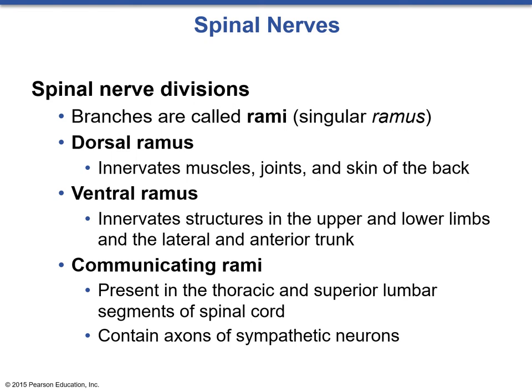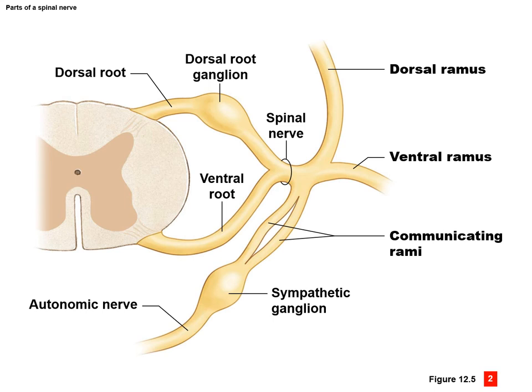From the spinal nerve, we branch into different divisions called rami — singular ramus, meaning arm-like or bend. The dorsal ramus innervates muscles, joints, and skin of the back. The ventral ramus innervates structures in the upper and lower limbs and the lateral and anterior trunk. We also have the communicating rami, present in the thoracic and superior lumbar region, which contain axons of the sympathetic neurons of the autonomic nervous system. The dorsal root ganglion merges with the ventral root to form the spinal nerve, which then branches to the dorsal ramus toward the back, the ventral ramus out to the sides and limbs, and the communicating rami running the length of the thoracic and upper lumbar spinal cord.